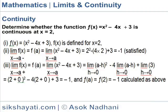Determine whether the function f(x) = x² - 4x + 3 is continuous at x = 2. (i) f(x) = (x² - 4x + 3), f(x) is defined for x = 2.